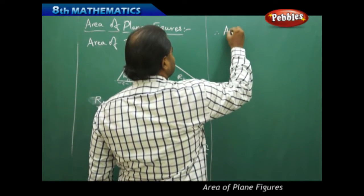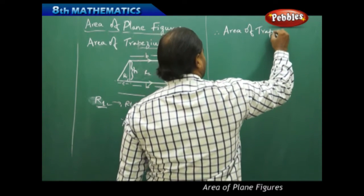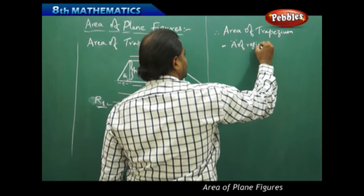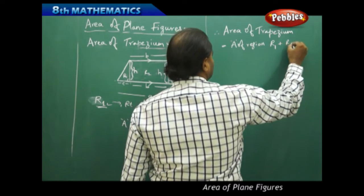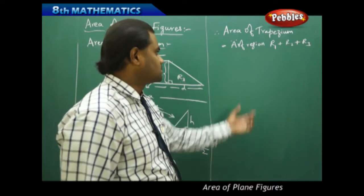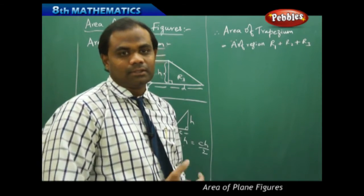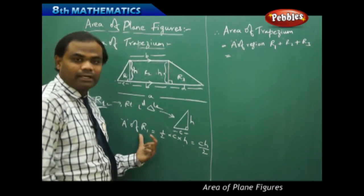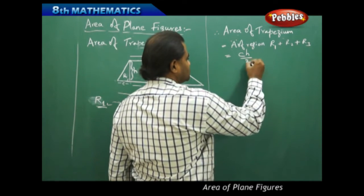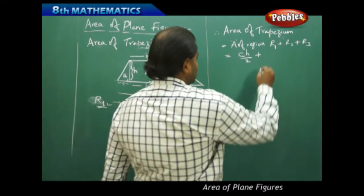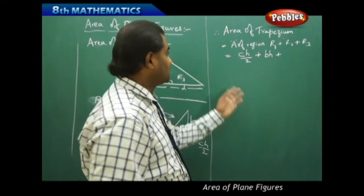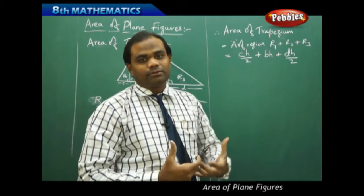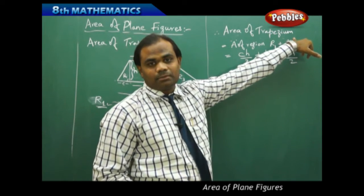To find the area of the entire trapezium, it is nothing but finding the areas of regions R1, R2, and R3 and summing them up. Area of region R1 is CH over 2, area of region R2 is BH, and area of region R3 is DH over 2. Therefore, area of trapezium equals area of R1 plus R2 plus R3.